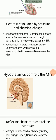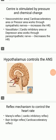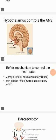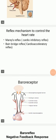The autonomic nervous system — sympathetic and parasympathetic — is controlled by the hypothalamus. Now we will see the reflex mechanisms to control heart rate. The first reflex is Marey's reflex, which is an inhibitory or cardioinhibitory reflex. The second reflex is Bainbridge reflex, which is a stimulatory or cardioacceleratory reflex.